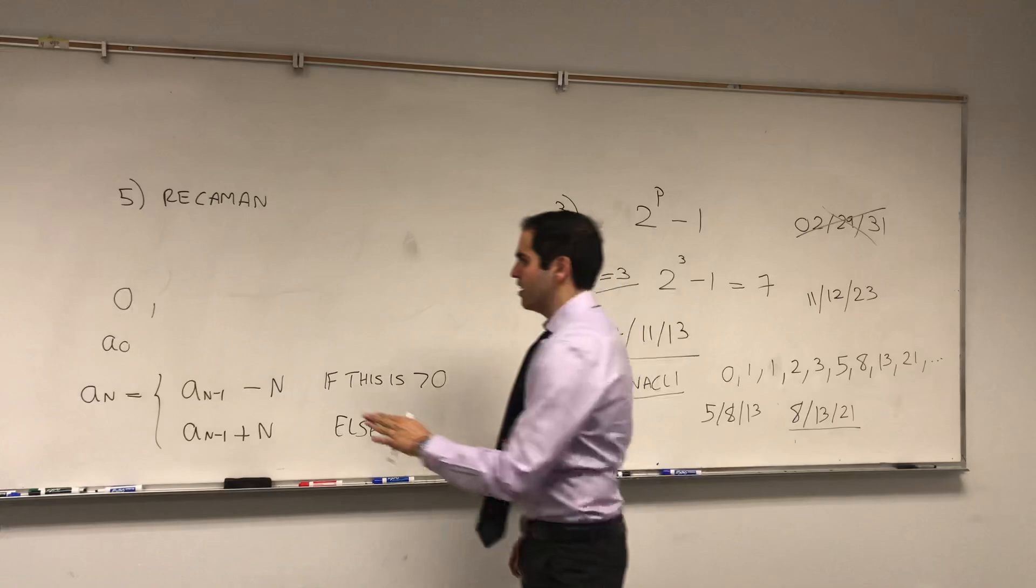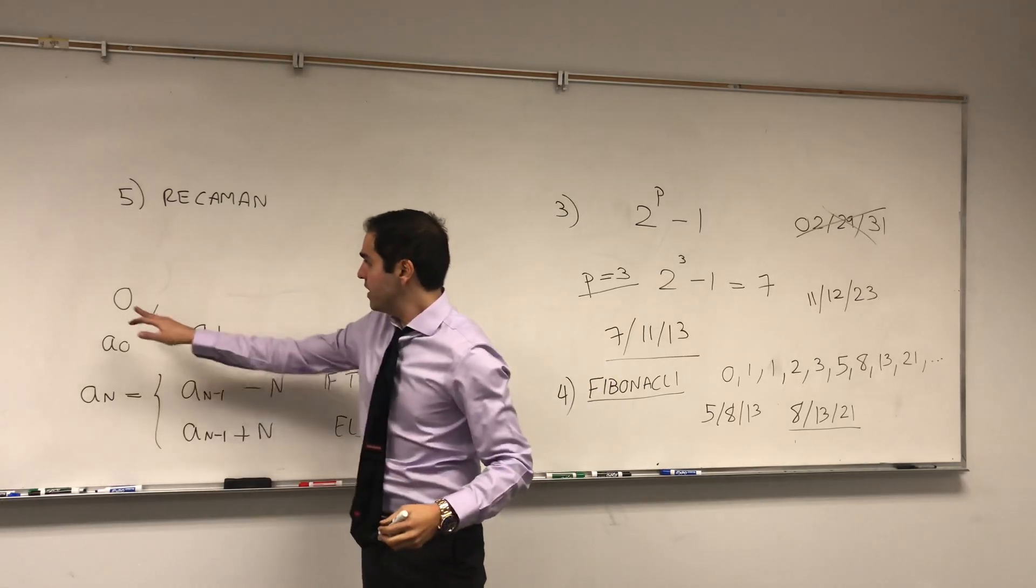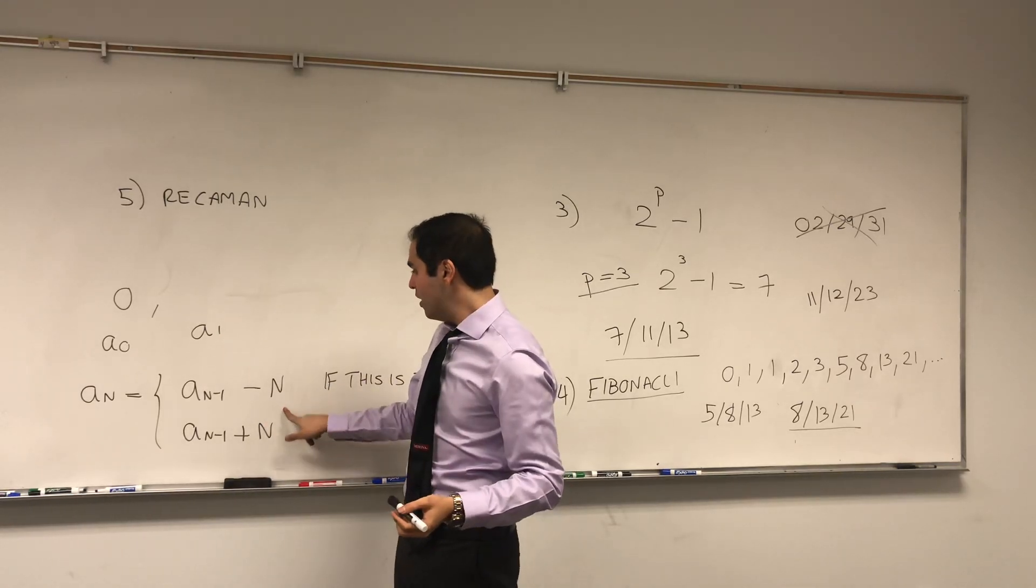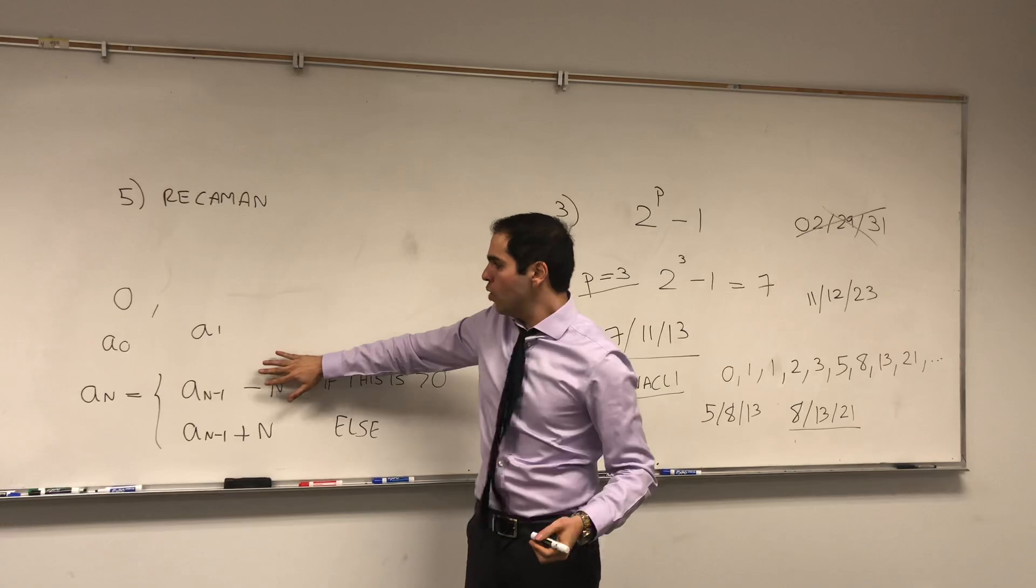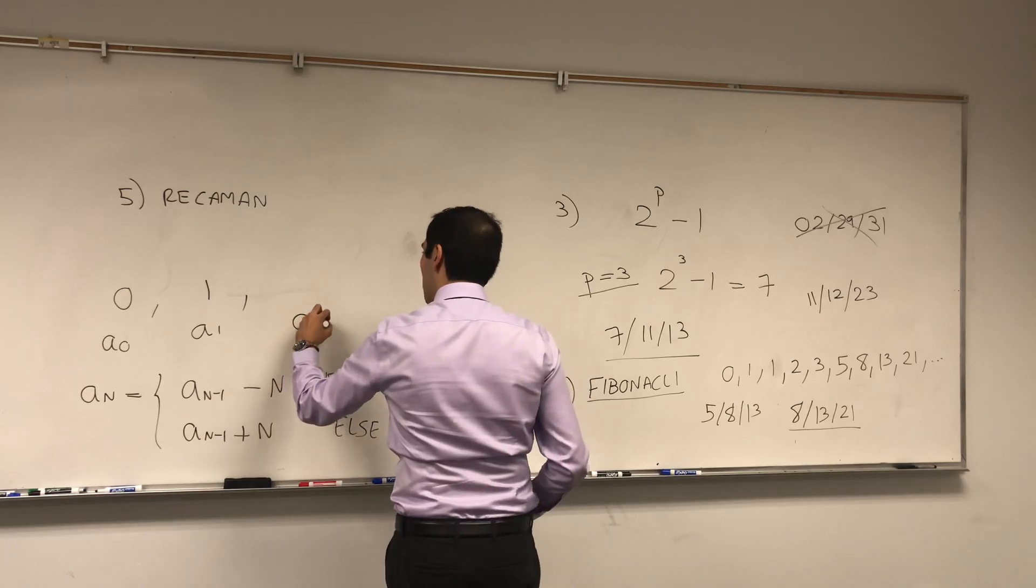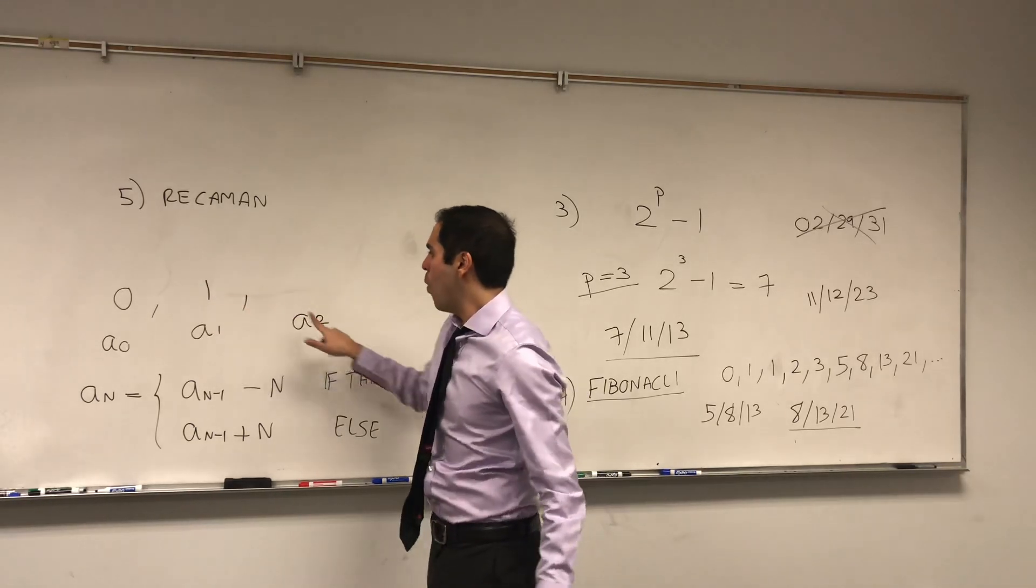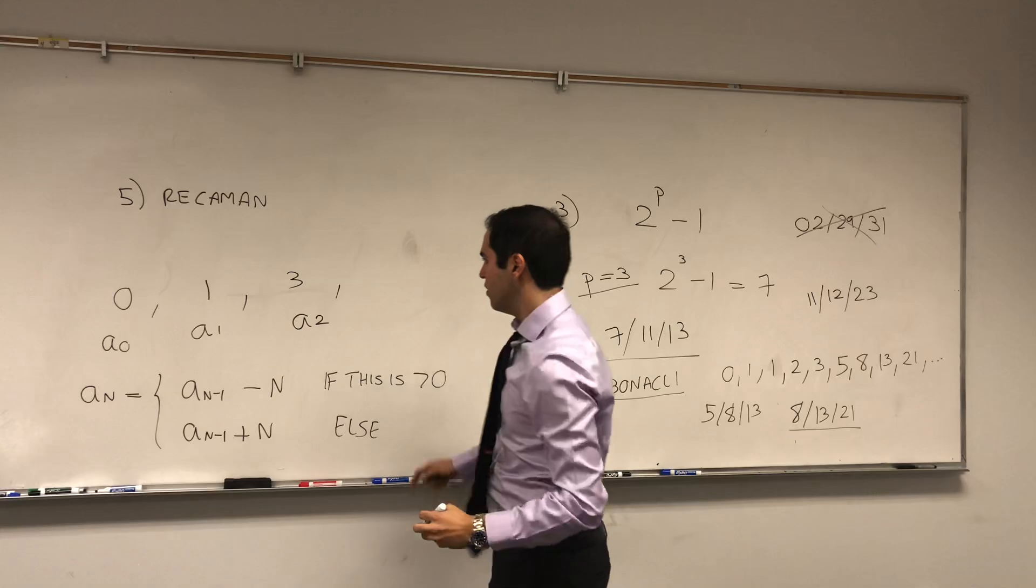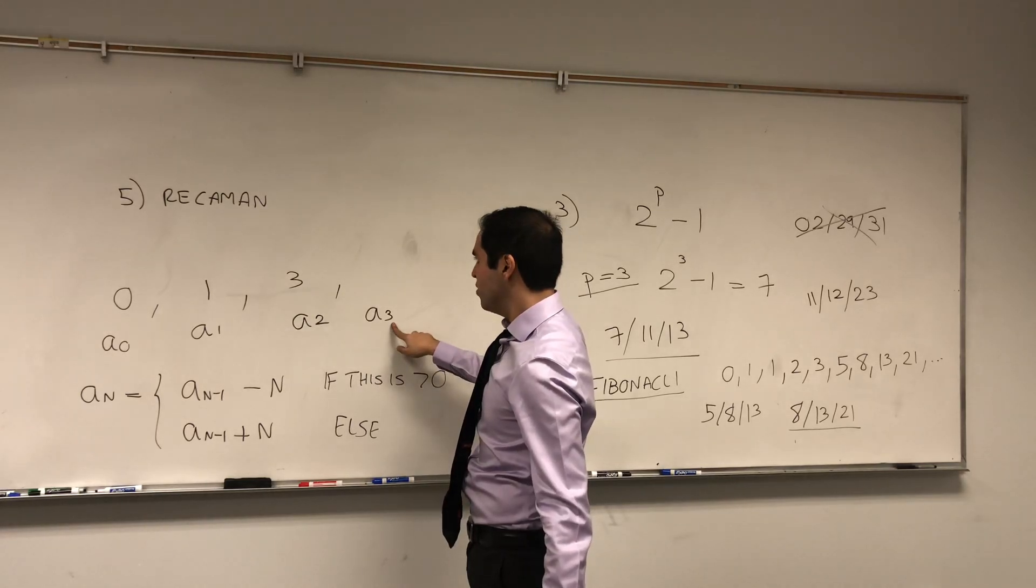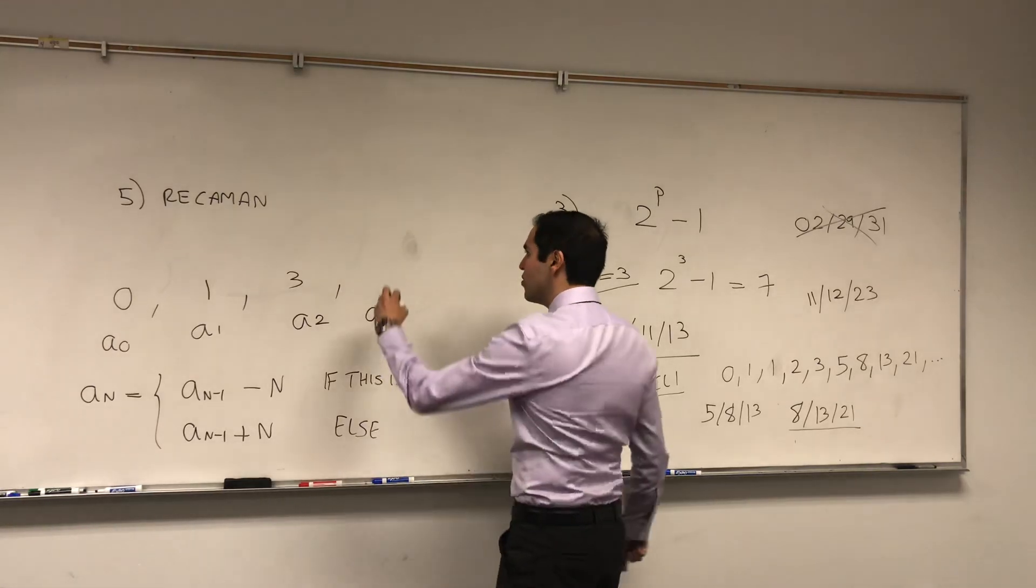So let's see how we can construct this. So we are a zero, let's say a one. What this means is, you can take the previous thing, zero, and you subtract one, which gives you minus one, which is negative. So you don't subtract one, you add one to zero, and you get one. Now, how about the next one? So a two, one minus two, which is negative. So one plus two, which is three. Now, a three. Three minus three, which is zero, which is not only not positive, but already in that sequence, so six.